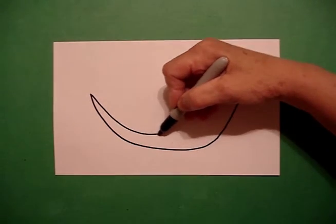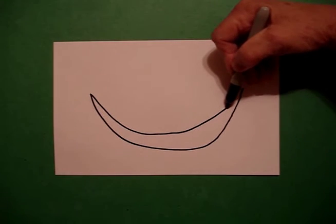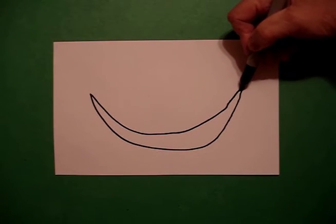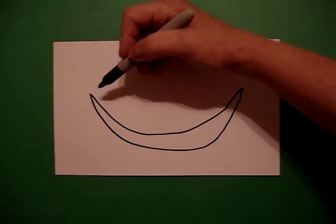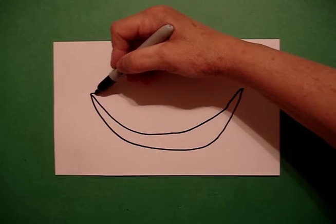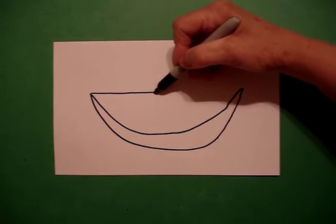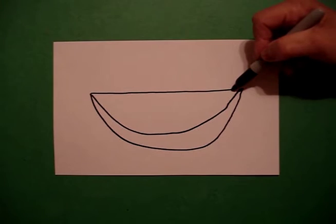Big curve line, keep going, keep going, and connect on the right. I come back to the left again, and now I'm going to draw a slightly curved line, up, over, connect.